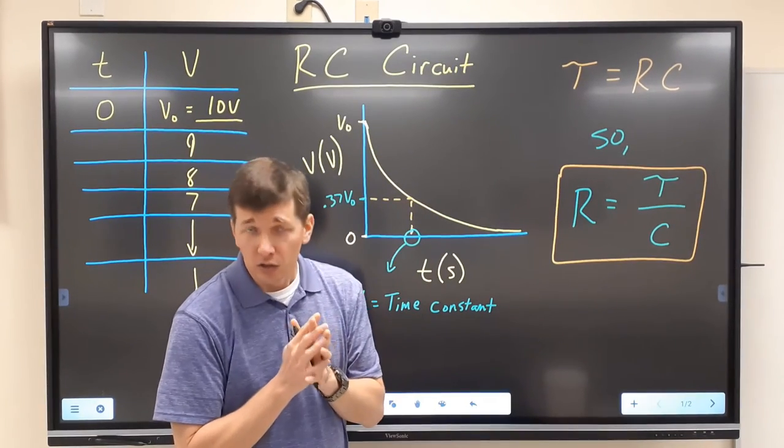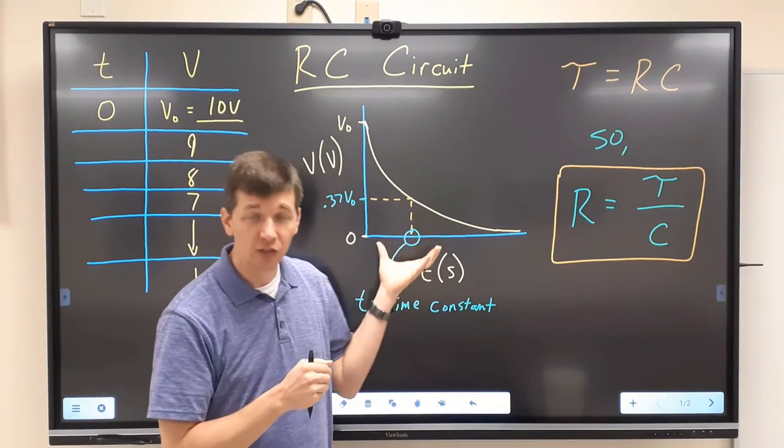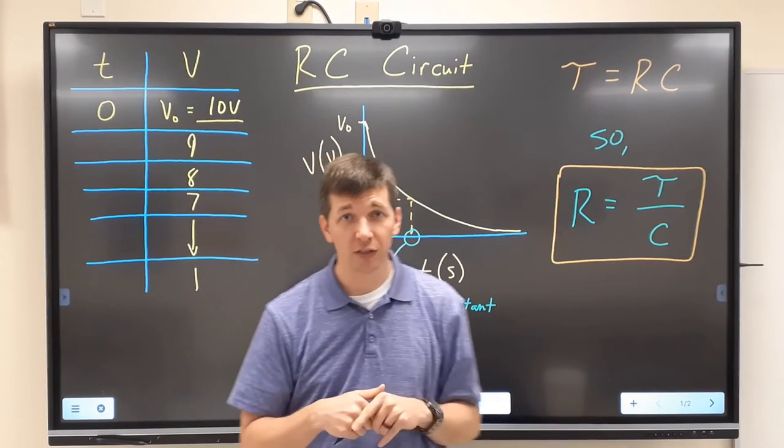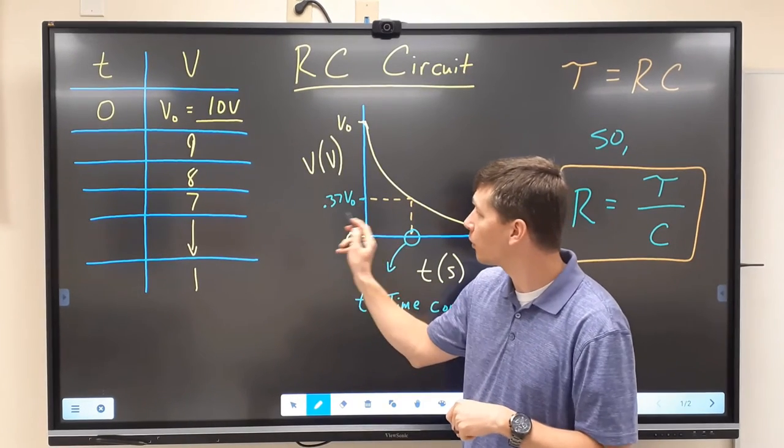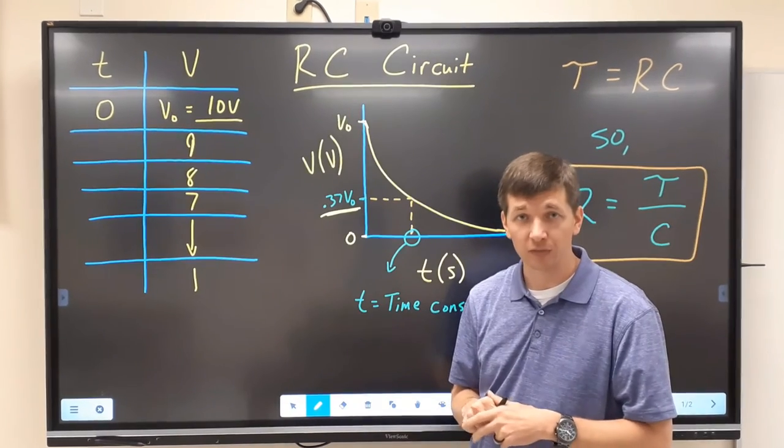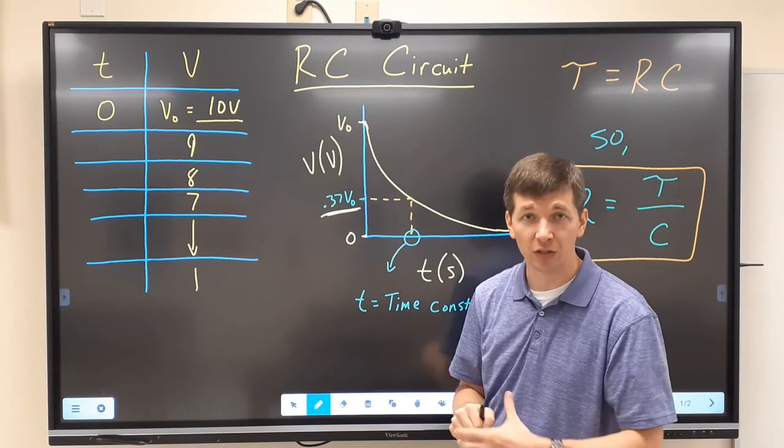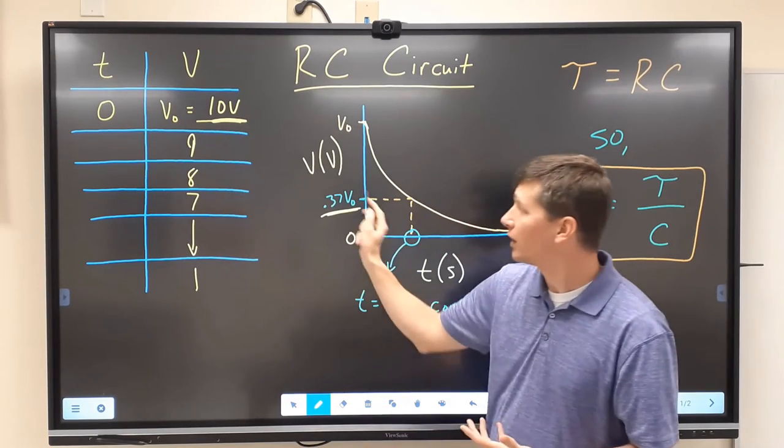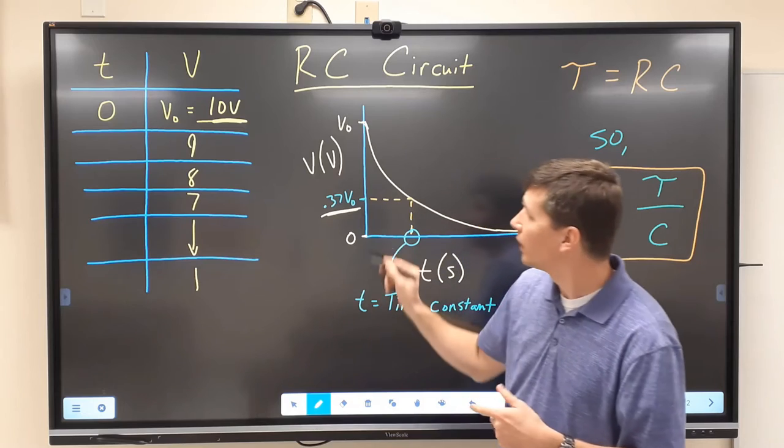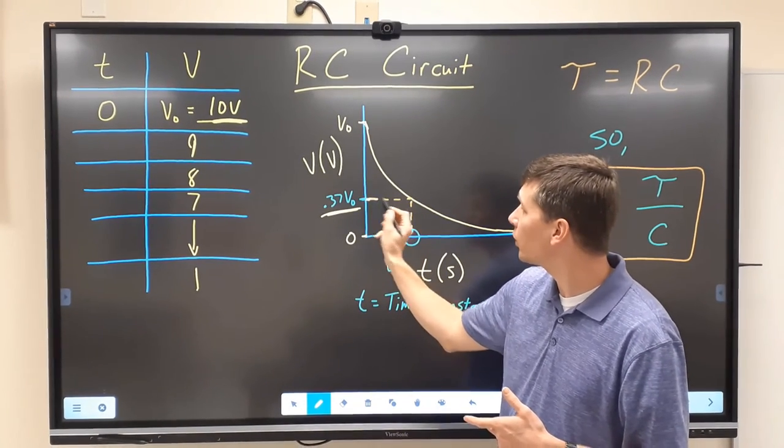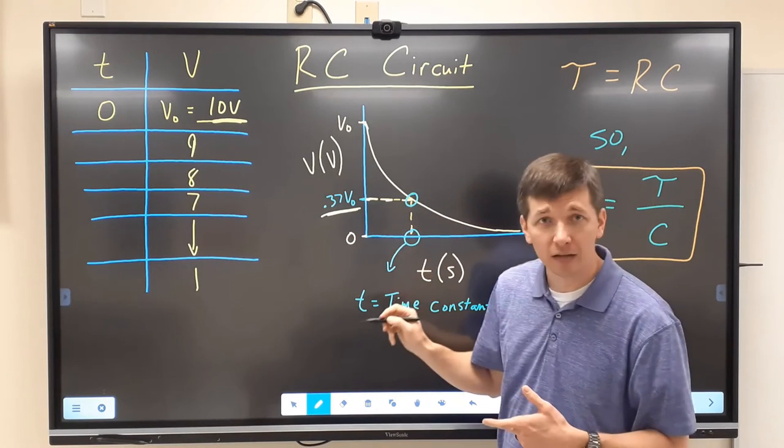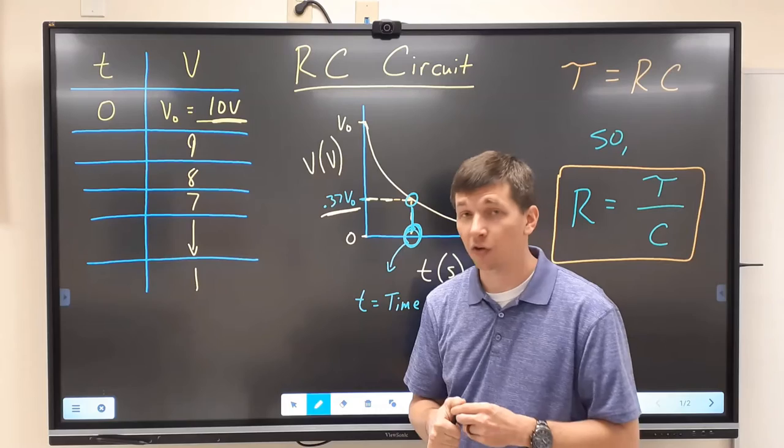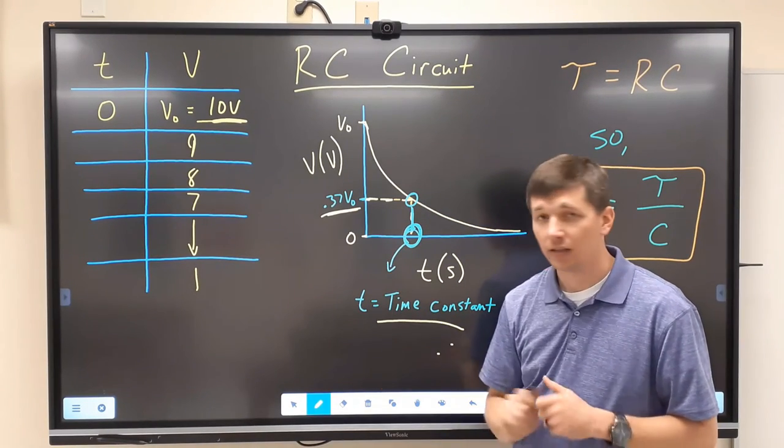And so to find that, what happens after one time constant goes by is your capacitor will lose 63 percent of its charge or 63 percent of its voltage. So that's why on this graph I've marked off right here 0.37 times the original voltage. If we've lost 63 percent, we have 37 percent of the original voltage left over. So for us, if we start at 10 or close to it, this should be somewhere around 3.7 volts. And at that point on your graph, then you can just work your way across here, find where that intersects your data, come straight down, whatever that time is on your graph, that is the time constant.